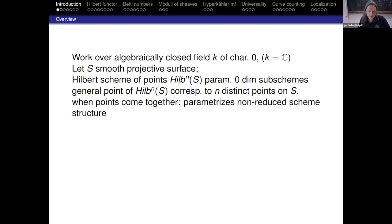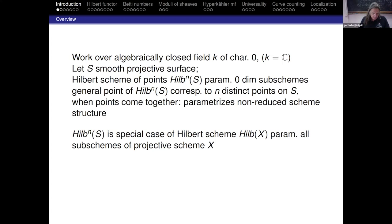We will work over an algebraically closed field of characteristic zero, and whenever useful, I take it to the complex numbers. S will be a smooth projective surface. The Hilbert scheme of n points on S, Hilb^n(S), parametrizes zero-dimensional sub-schemes of length n on S. A general point corresponds to a set of n distinct points on S, but these points could come together, and then the Hilbert scheme parametrizes the corresponding non-reduced scheme structure.